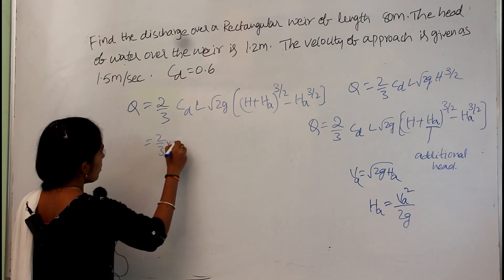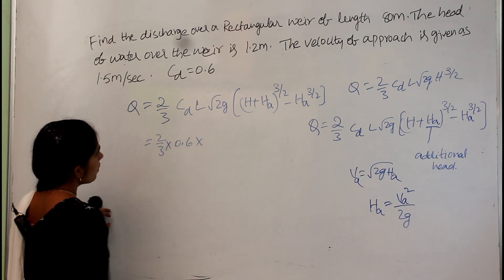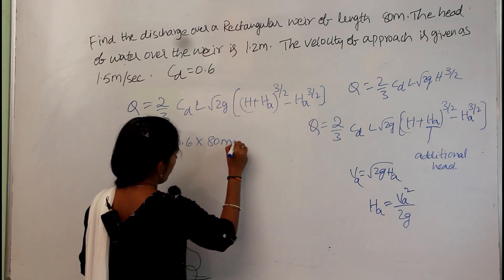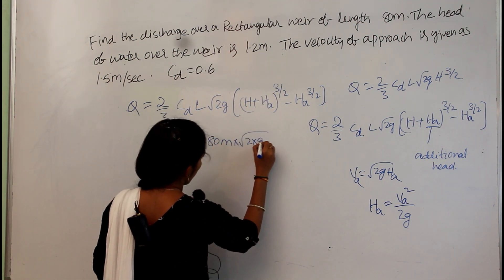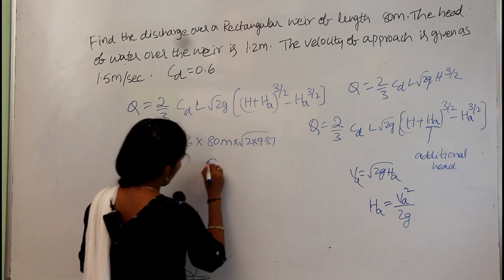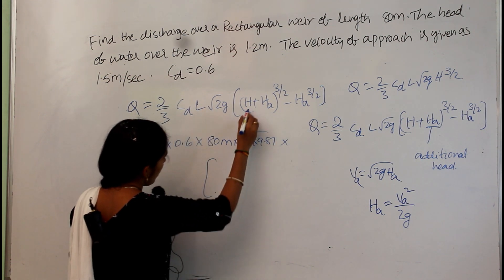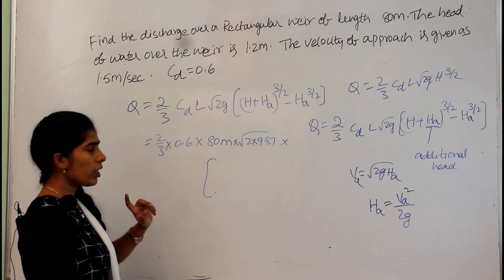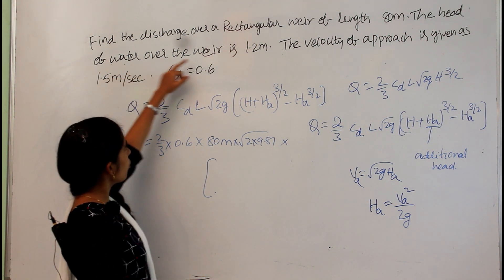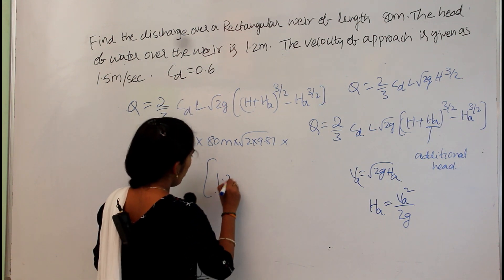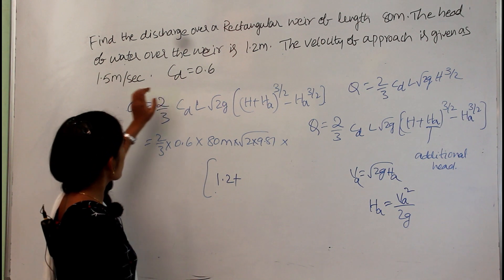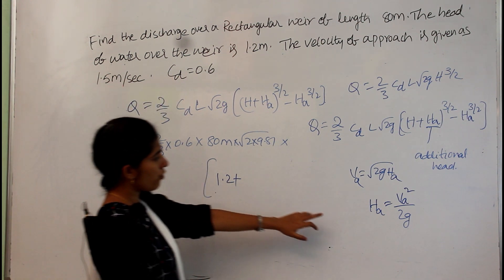2/3 cd they give as 0.6 and length they give as 8.0 meters in the problem, and root 2g value is 2 into 9.81 multiplied by h. H is the head of water and ha is the additional head. The head of water they give as 1.2 and additional head they did not give. Only they give the velocity, so we have to calculate from this formula.